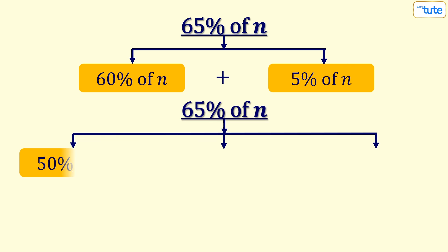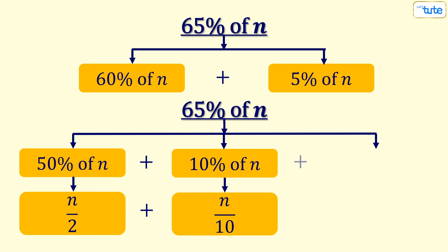But, if we split 65 percent as 50 percent, 10 percent and 5 percent, these are easy to find and in the last step, we will simply add them.